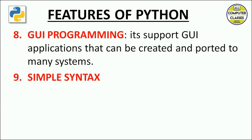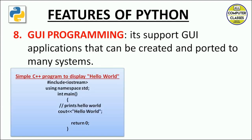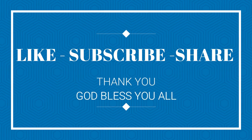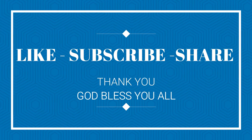The ninth point is simplicity of syntax. Python's syntax is very simple. For example, to print 'Hello World' in C++, you need to write almost eight to nine lines of code. But in Python, you can do it in a single line. Compare the simplicity of these two — I hope this was useful information for all of you.